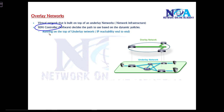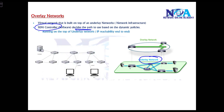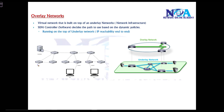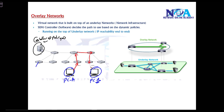In overlay networks, the SDN controller decides what the forwarding path will be, based on requirements or dynamic policies. For the overlay network to work, there must be an underlay network built in the backend. Underlay means IP end-to-end reachability; overlay means the actual path used between two endpoints. For example, if PC-A is trying to communicate with PC-B, the actual path used is decided by the controller.